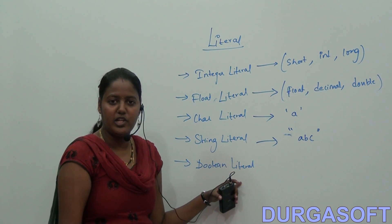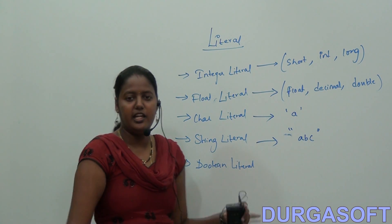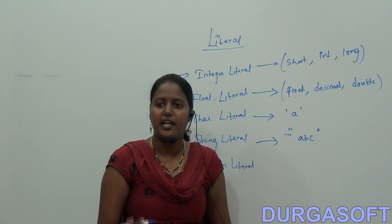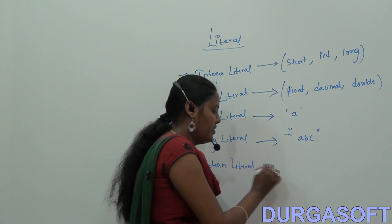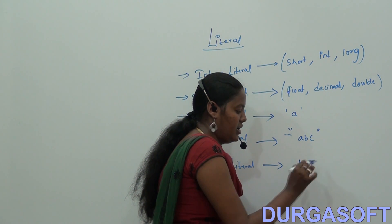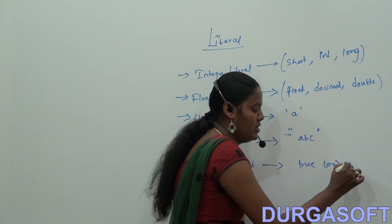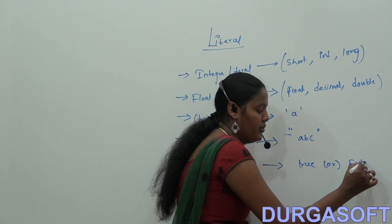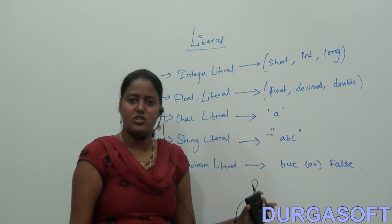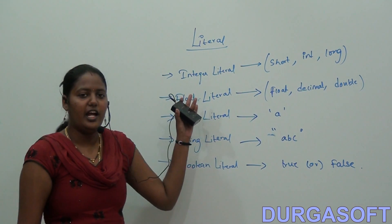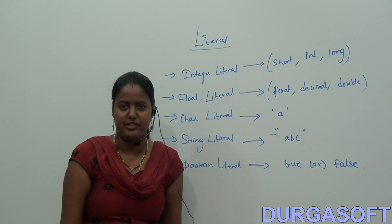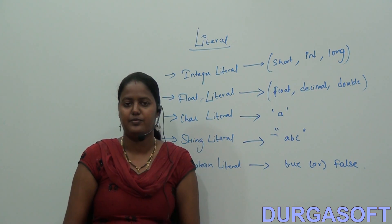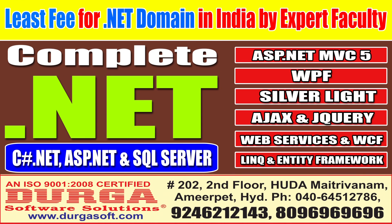The last one is Boolean literal. Here we assign either true or false as the constant value. So these are literals and the five types of literals.